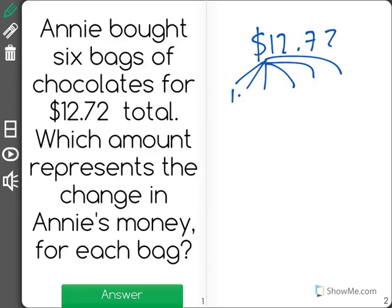So what we know is that we're going to have a division problem here because we're trying to find out the total for each bag. So she spent $12.72 divided evenly amongst these six bags.